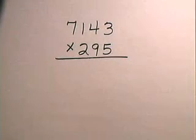Now we will multiply whole numbers. We will now multiply 7,143 times 295.